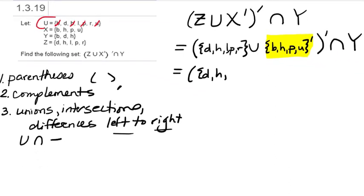So let's write that down. We have {d, h, l, p, r} union with {d, l, r}, and then complement, intersect Y.